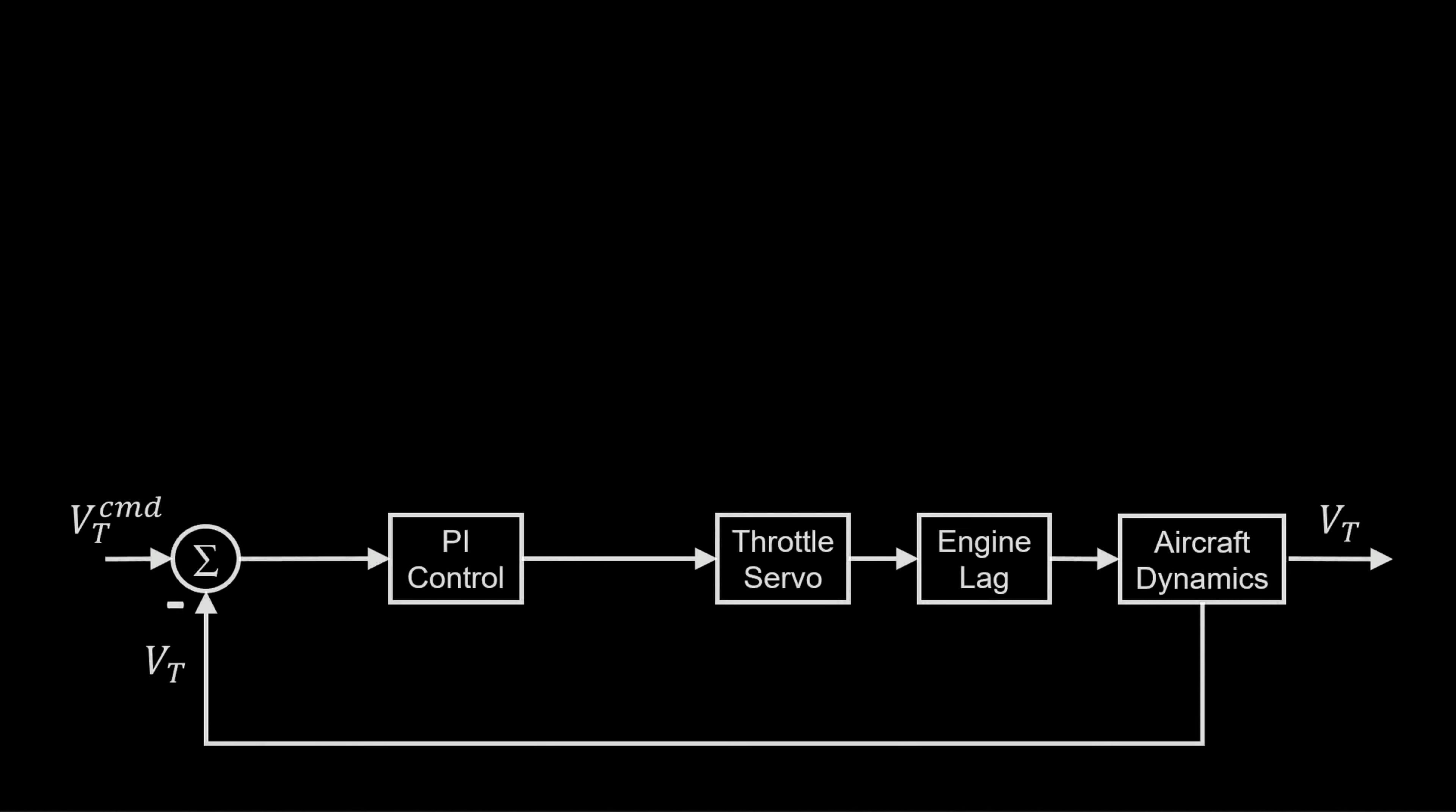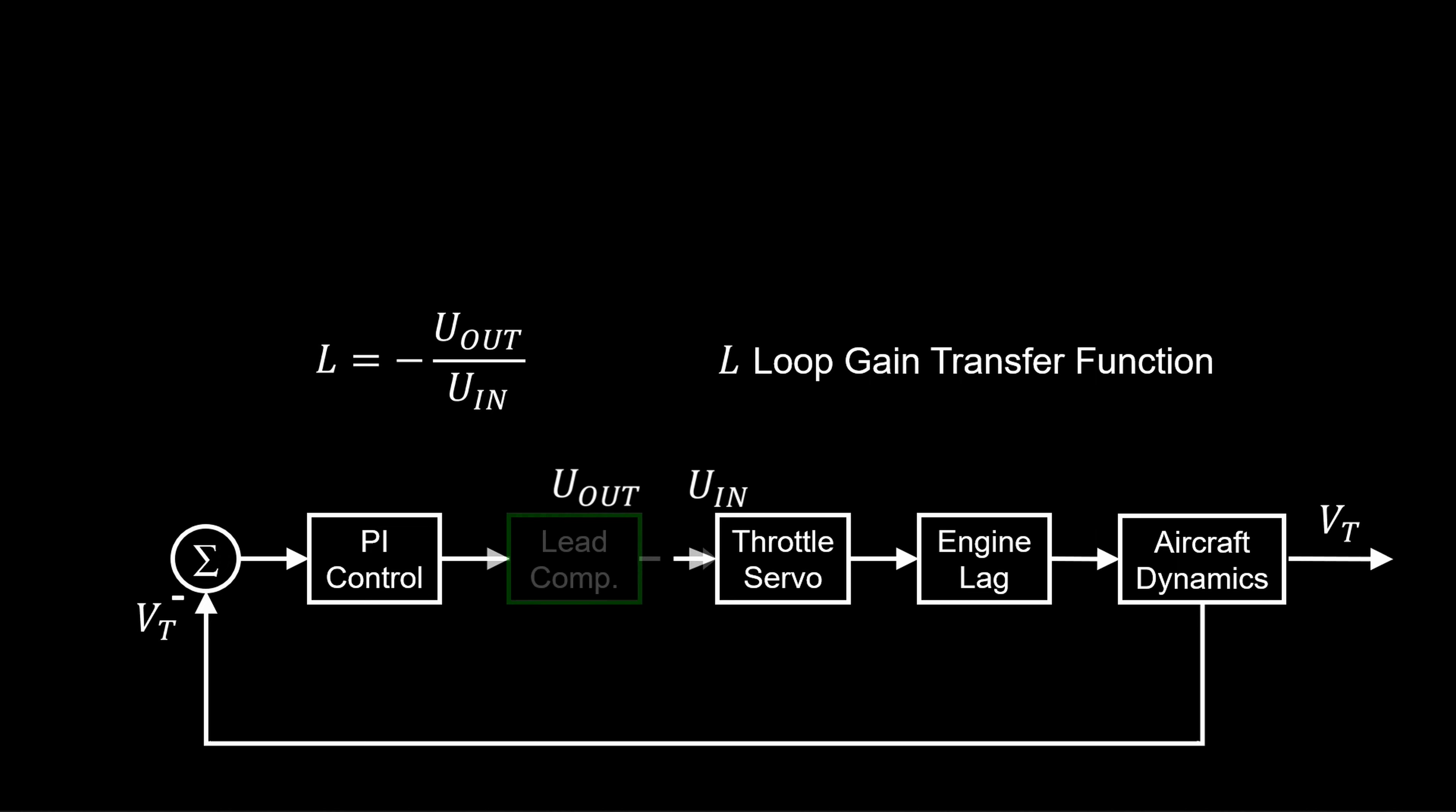First, consider the case without the lead compensator. Breaking the loop at the plant input, we construct the loop gain transfer function. Then, with the lead compensator in the loop, the compensator is part of the controller. So, we break the loop at the plant input between the compensator and the throttle. That becomes the loop gain for the compensated system.